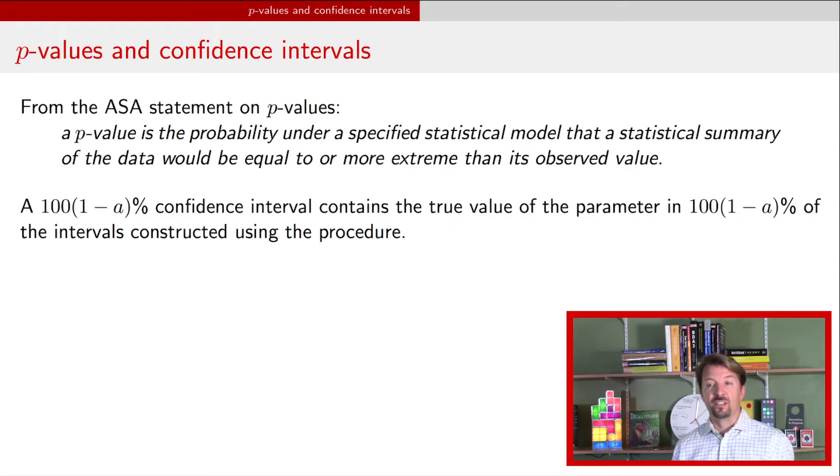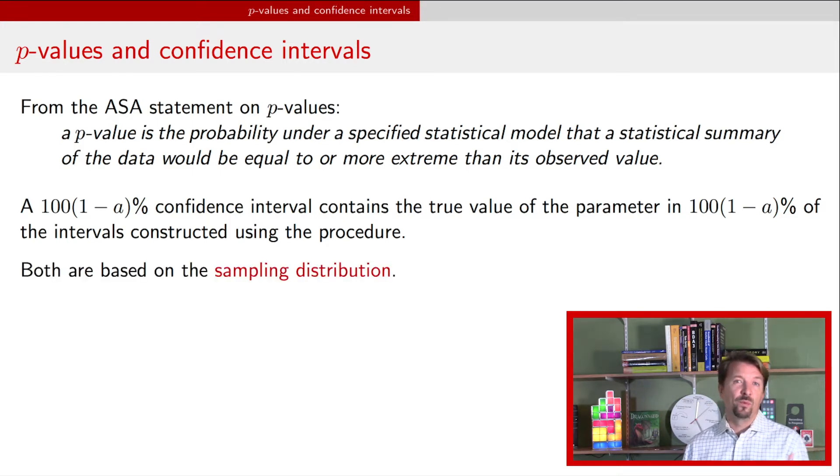In contrast, we have confidence intervals and a 100(1 - α)% confidence interval contains the true value of the parameter in that percentage of the intervals constructed using the procedure. Here 1 - α is called the confidence level, α is oftentimes called the significance level and relates to making decisions with p-values. So there's nothing very obvious about why these two should be related at all. But they are actually related and they're related because both of them rely on the sampling distribution of the data and in particular of the statistic, the p-value, a test statistic, and the confidence interval endpoints. But usually those are related.